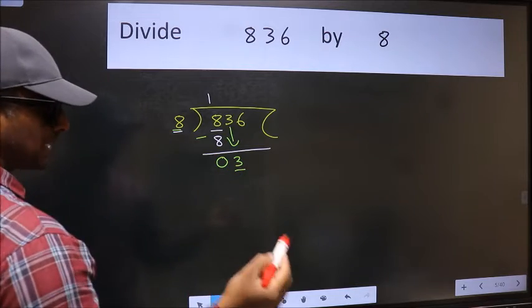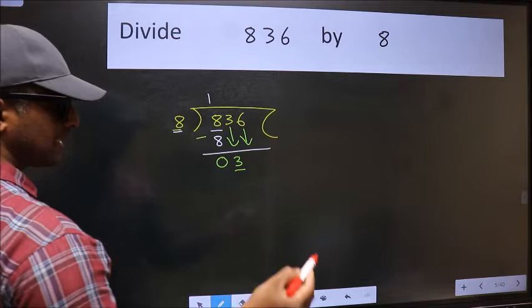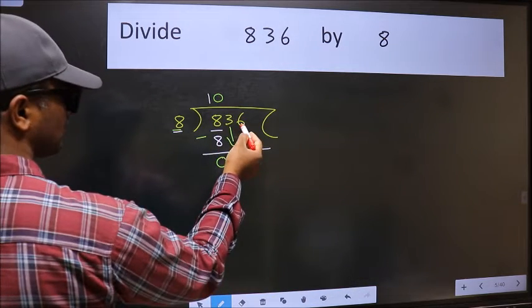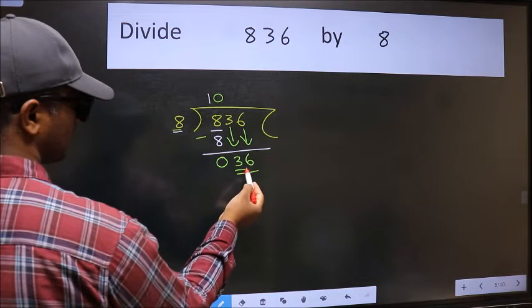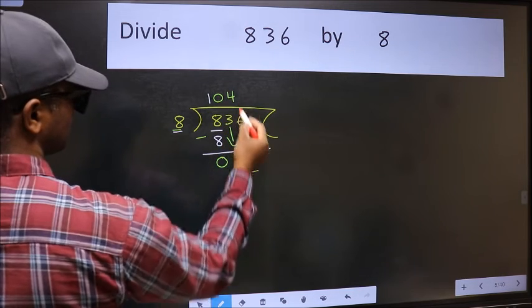So we should bring down the second number. And the rule to bring down second number is we should put 0 here. Then only we can bring this number down. Now 36. A number close to 36 in 8 table is 8 fours 32.